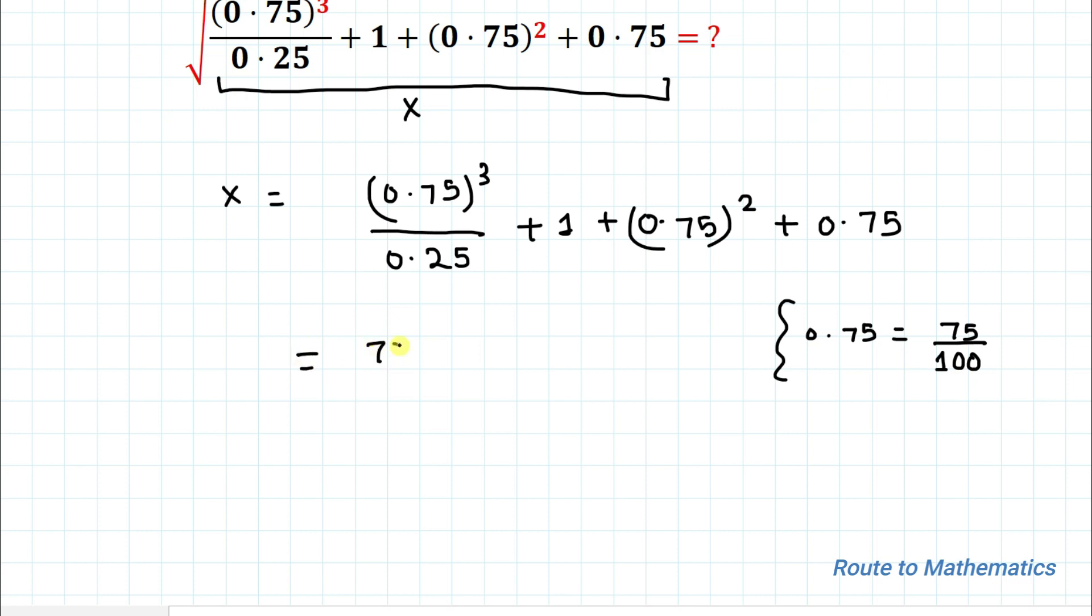So I can write here 75 by 100 multiplied with 75 by 100 multiplied by 75 by 100 divided by here we have 0.25. Similarly, 0.25 can be written as 25 by 100. The fractional value of 0.25 is nothing but 25 by 100.